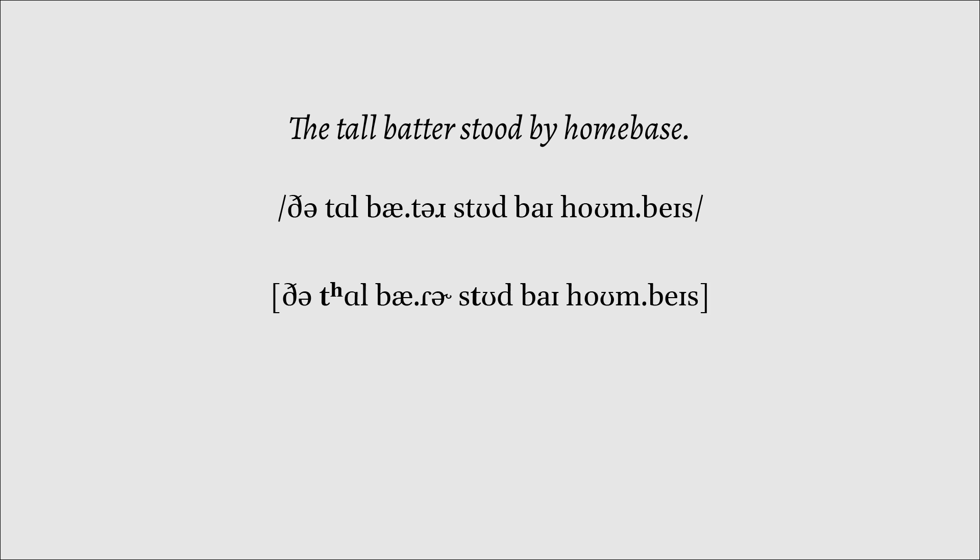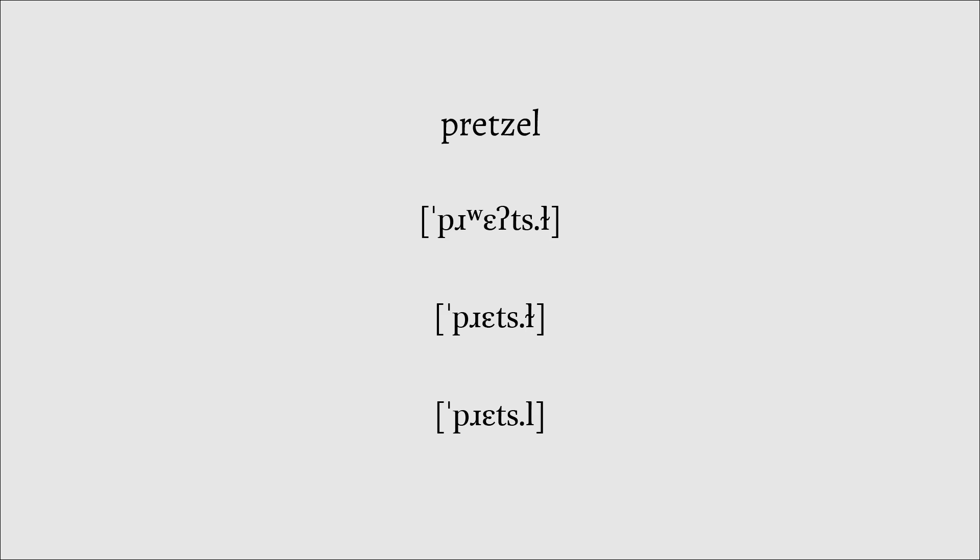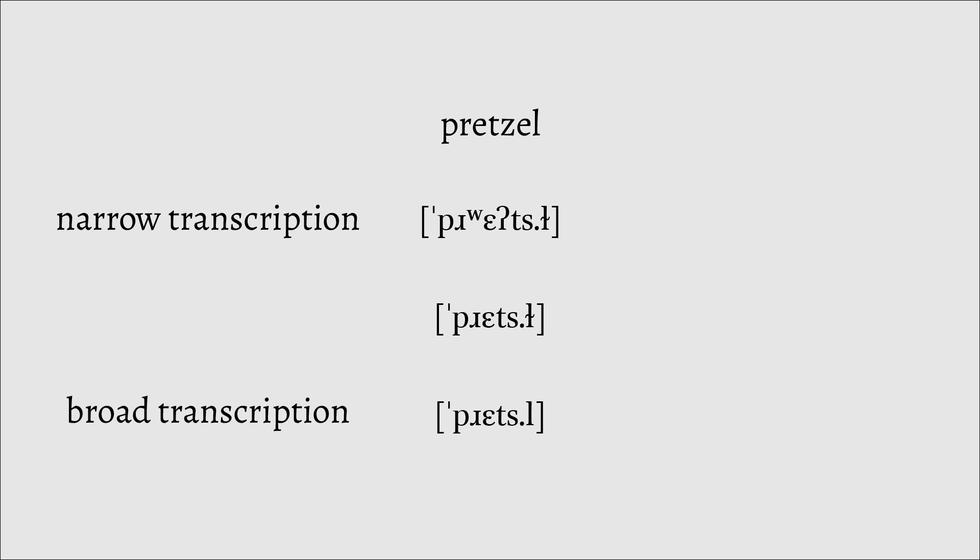If we have a phonetician transcribe the sentence from earlier, it'll look something like this. Notice how the phonetician goes into much more detail about each of the sounds produced. Of course, this transcription method may be a bit obtuse sometimes, so they may ditch unneeded phonetic qualities not relevant to their current study. These two styles of transcription are known as narrow transcription — with as much information density as possible — and broad transcription, where some phonetic information may be left out.